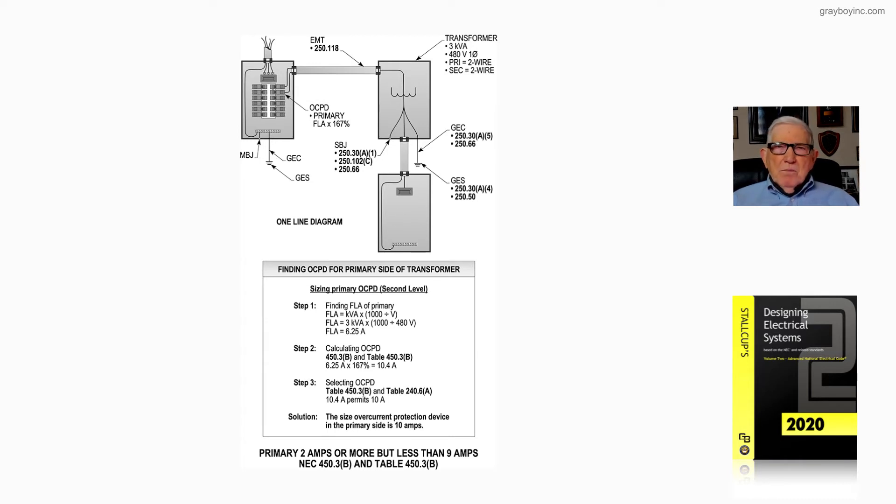the primary overcurrent device can protect the primary side of the transformer, the windings, the secondary side of the transformer, and everything is considered protective if you size it properly in relation to the ratio of the primary to the secondary voltage.